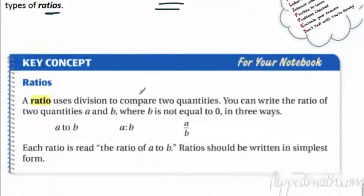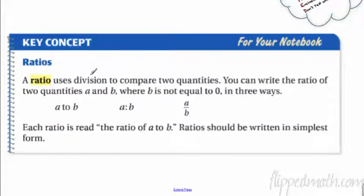Ratios are where you compare two quantities. That's it. It's when we use division to compare two quantities. There's a couple ways we can write it. We can write it a to b, we use the words. Word up. We can use a colon. Okay, that's a colon there, a to b.